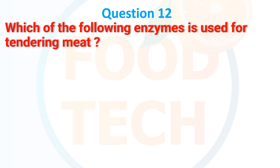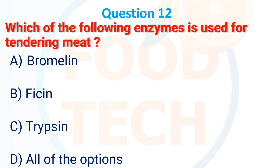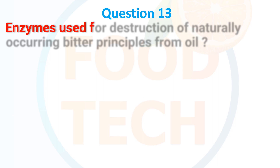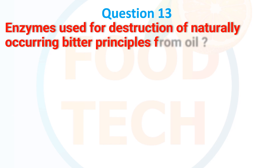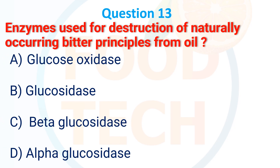Which of the following enzymes is used for tendering meat? A. Bromelain, B. Ficin, C. Trypsin, D. All of the options. The answer is D. All of the options. Enzyme used for destruction of the naturally occurring bitter principle from oil: A. Glucose oxidase, B. Glucosidase, C. Beta-glucosidase, D. Alpha-glucosidase. The answer is B. Glucosidase.